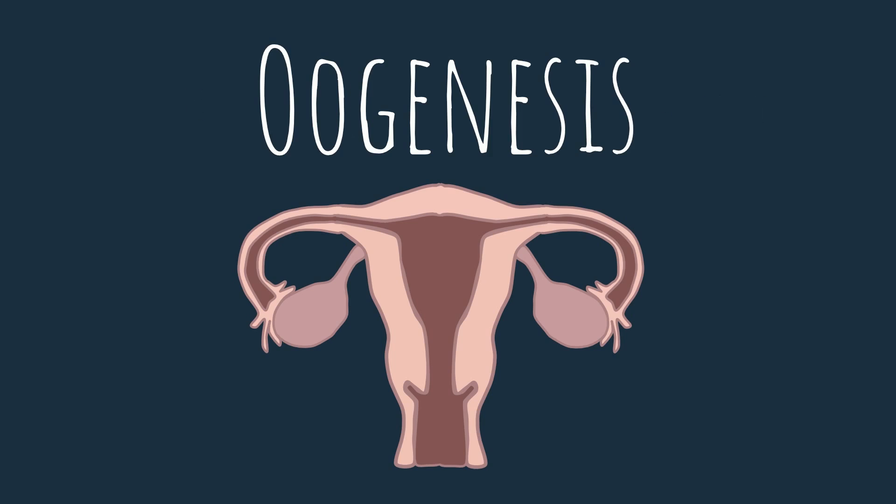To see oogenesis happen, we will need to go to the female gonads — the ovaries. Inside the ovaries, which you can see here, the oocytes begin to develop.